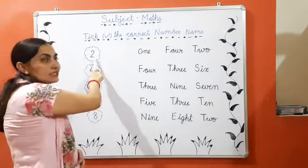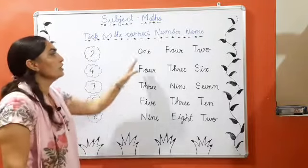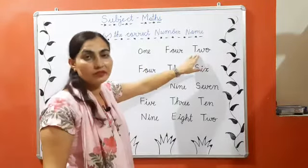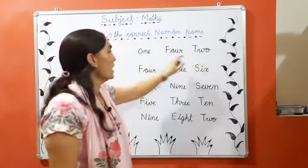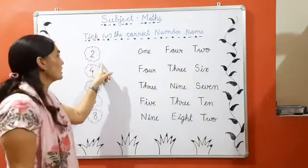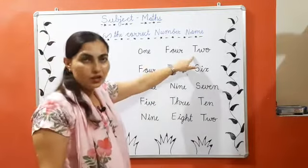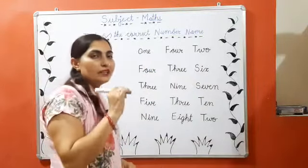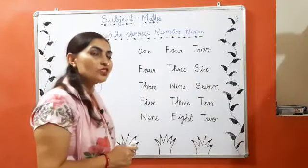After that, you will read the given number names. And then the number name for this number, you have to tick it. Okay? To start karin.